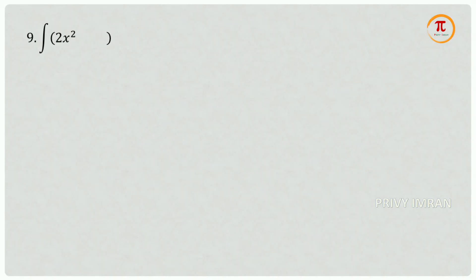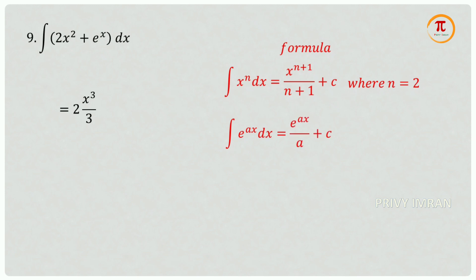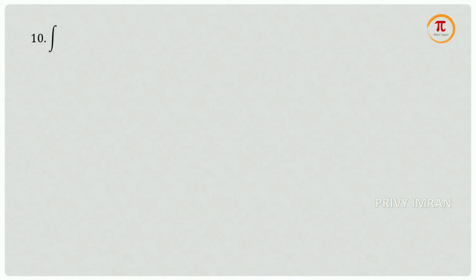Question number 9: integration of 2x squared plus e power x dx. Using the power formula where n equals 2, the first term is 2x cubed divided by 3. Using integration of e power ax dx where a equals 1, the second term is e power x plus c. The required answer is 2x cubed divided by 3 plus e power x plus c.